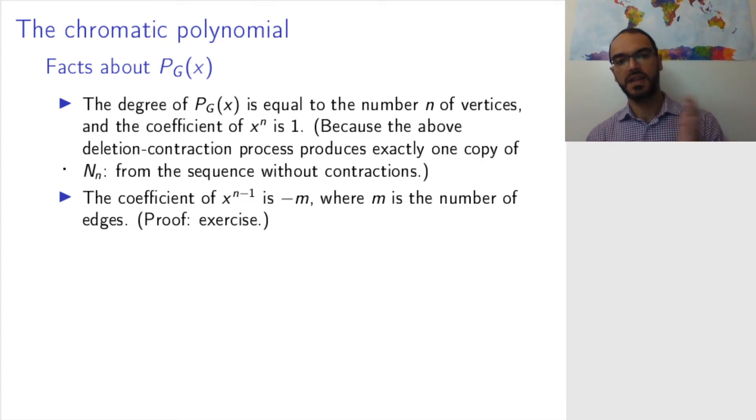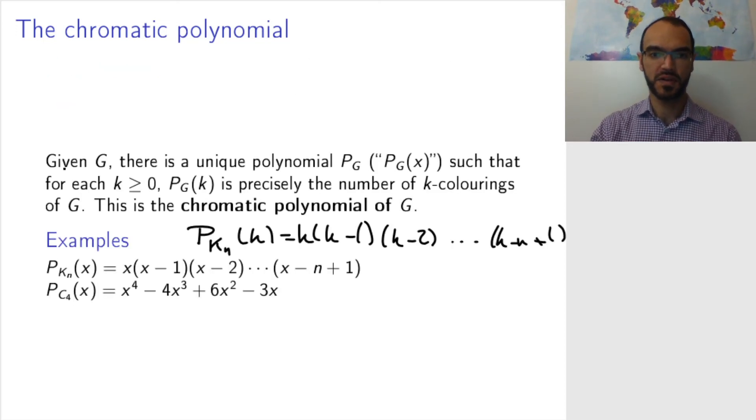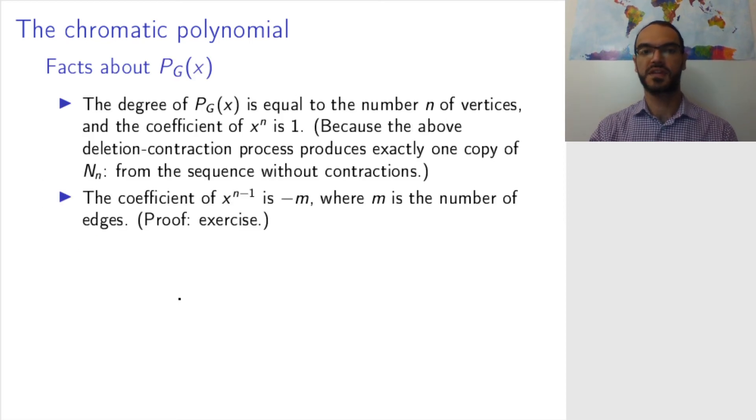The coefficient of the next part of the polynomial is minus the number of edges. So, for c_4, c_4 has four edges, and that's why we get minus four here. The proof of this is an exercise.